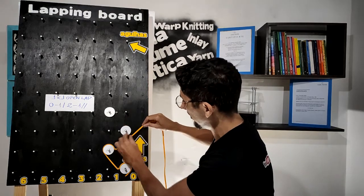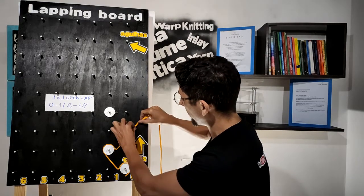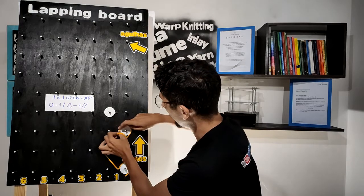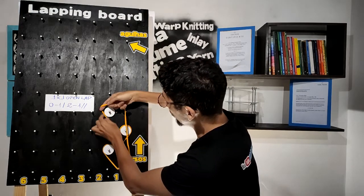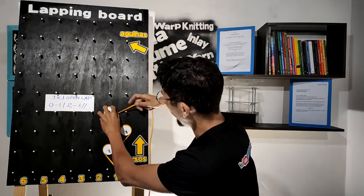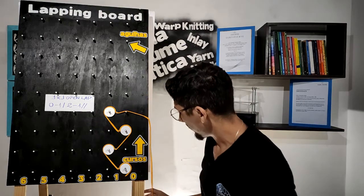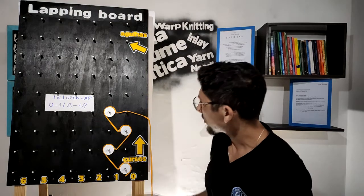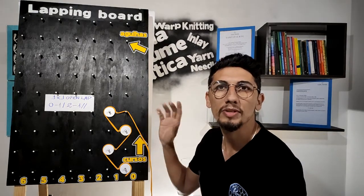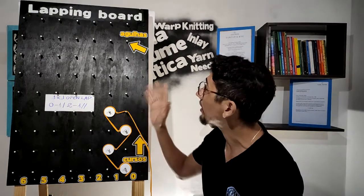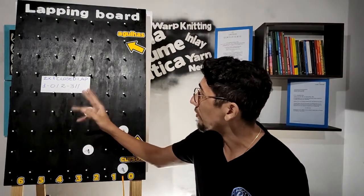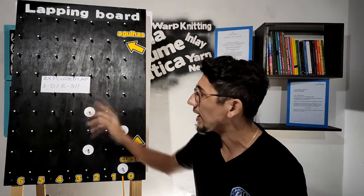Again: zero-one-two-one. This basic lapping is represented on the lapping board. Now let's represent the two-by-one closed lap, which has chain notation one-zero-two-three.